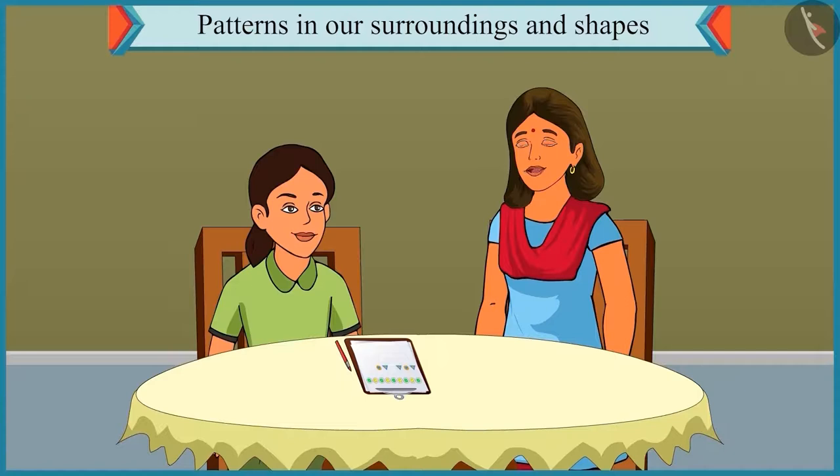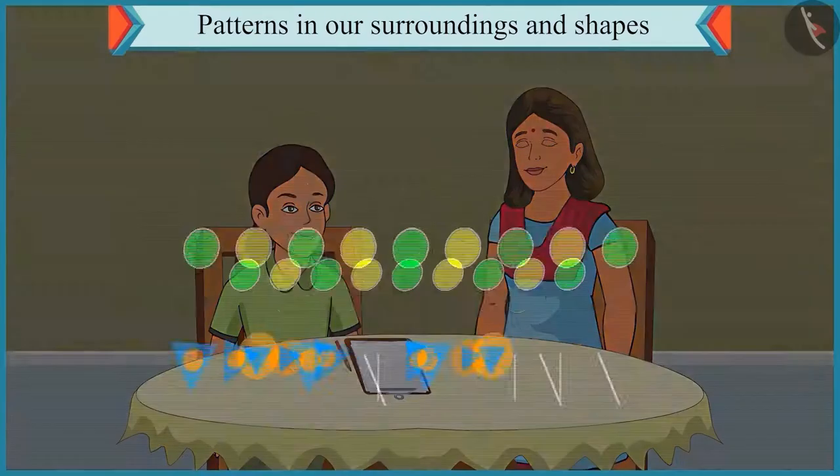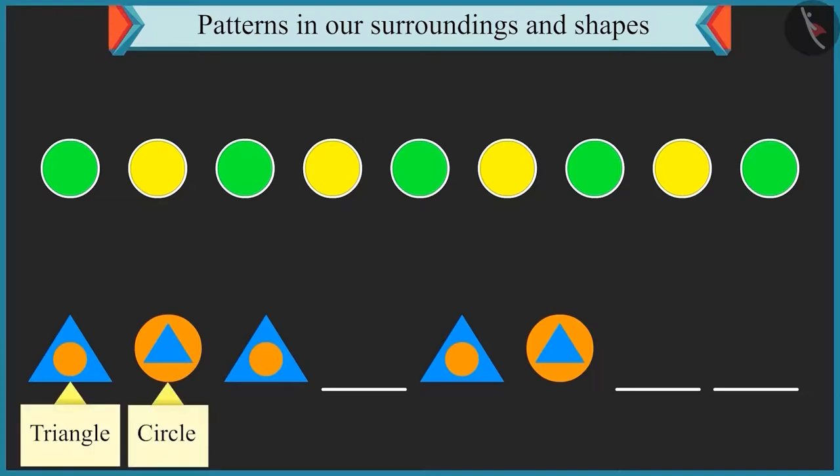Come on. Now look at the second pattern. This pattern is made of two shapes. Yes. You identified it right. There are triangles and circles in this pattern. Now look carefully. There is a small circle shape inside the triangle and after that there is a small triangle shape inside the circle in this pattern. This pattern is repeated again and again.